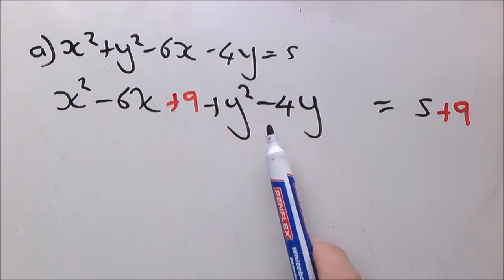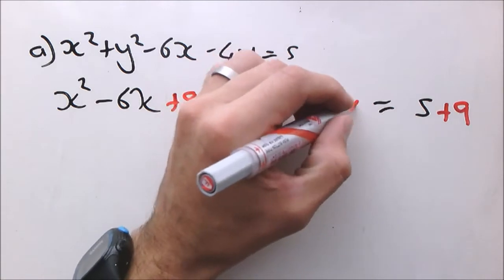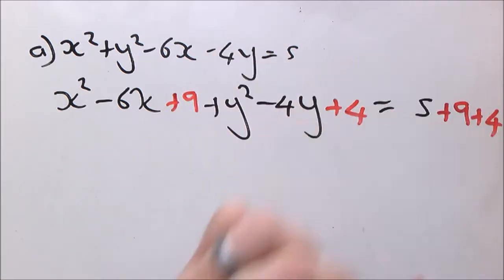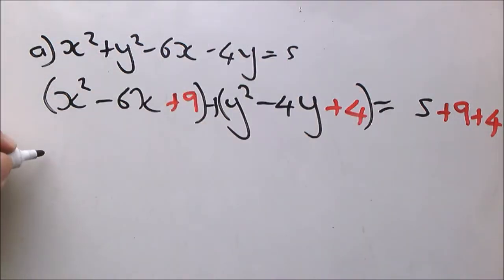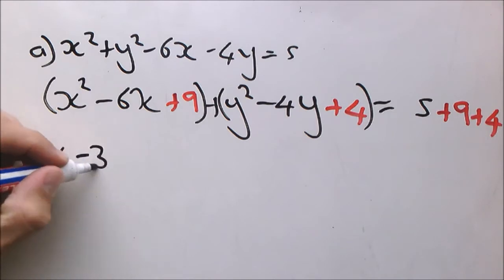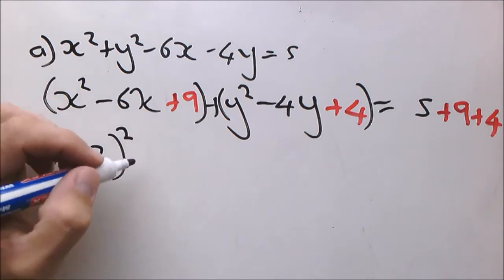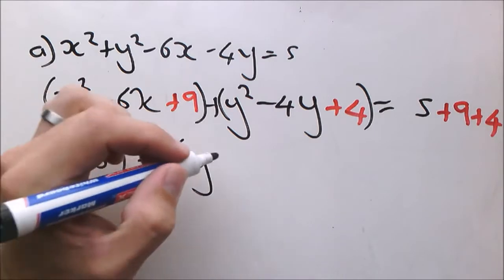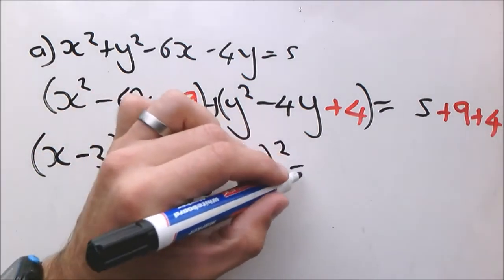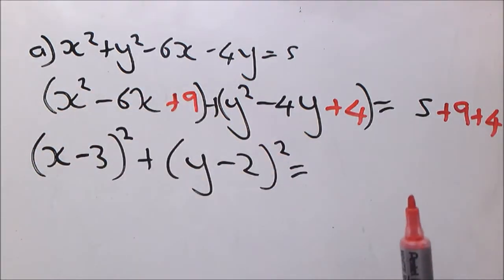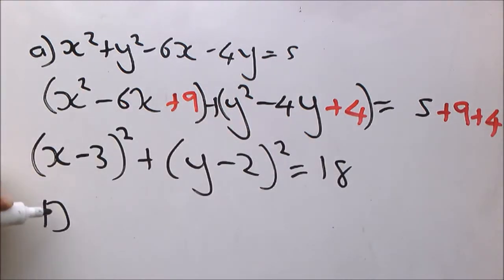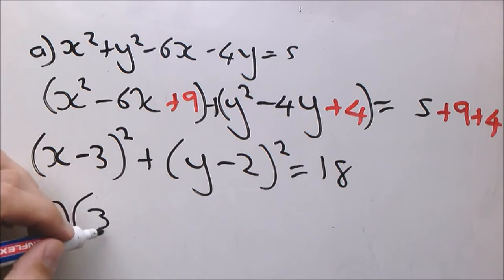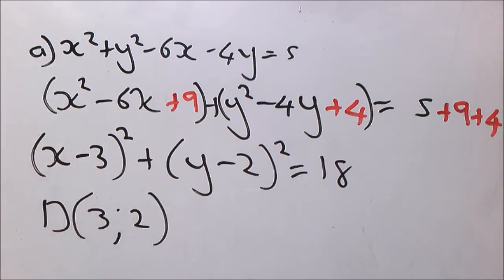And b over here is negative 4, so b over 2 is negative 2, negative 2 squared is plus 4. So we have to add on both sides. As usual I put my brackets there, then it's easier not to make a mistake. We factorize this and on the right hand side, 5 plus 4 is 9, 9 plus 9 is 18. So over here we have the coordinates of D, the center of the circle.